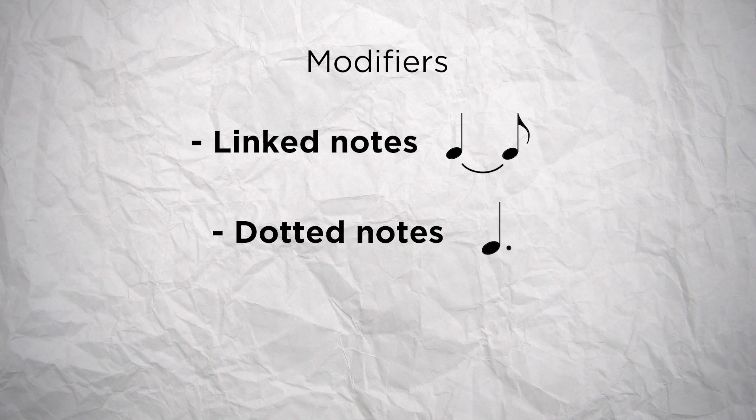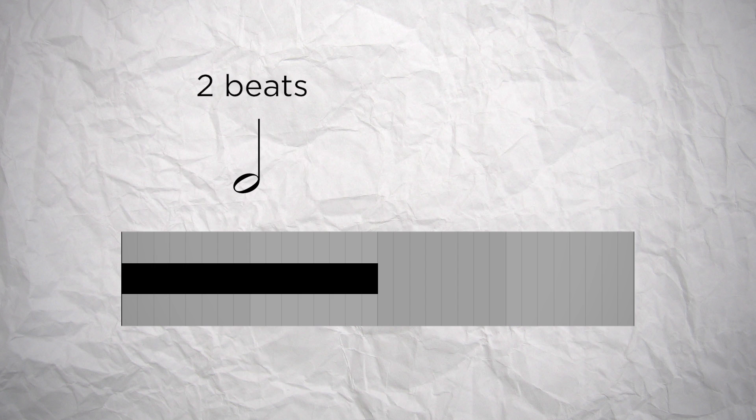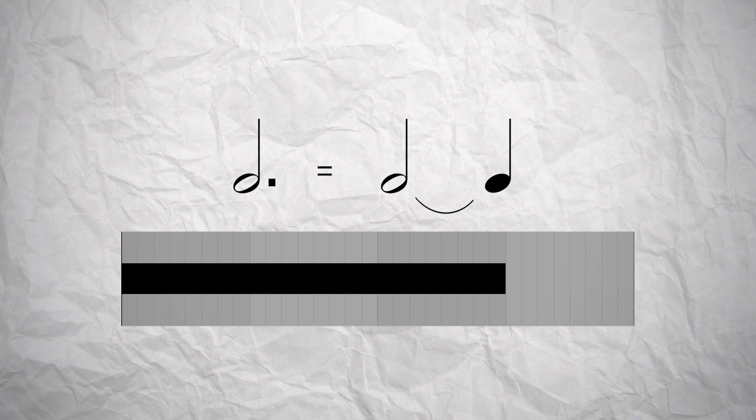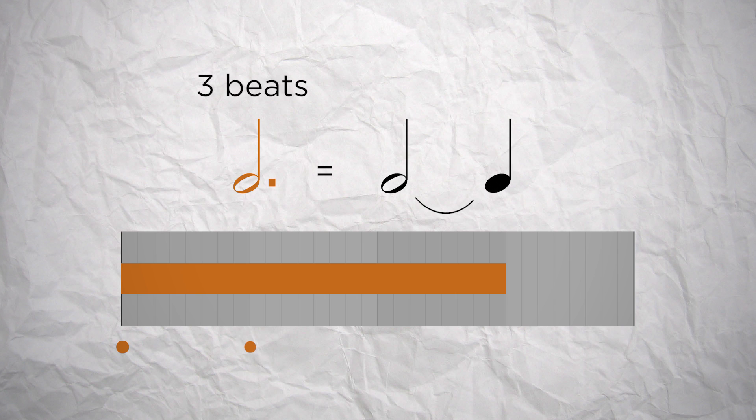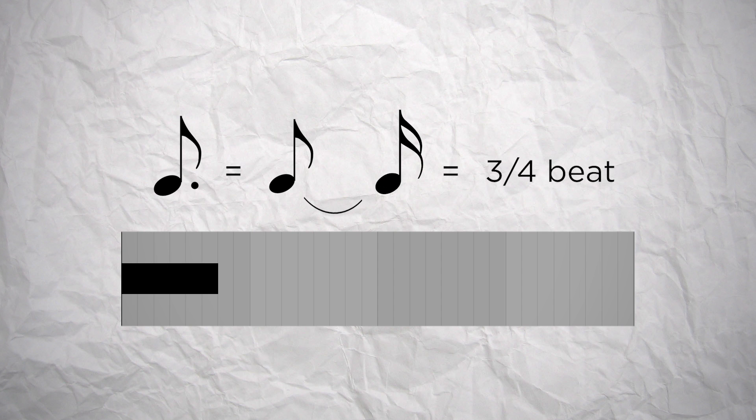Secondly, you can also add a dot to a note. Basically, it extends the length of these notes by half of its original value. For example, a half note is 2 beats. But a dotted half note would be a half note plus the half of a half note. So it's the same length that a half note plus a quarter note. 3 beats. A dotted eighth note would be the same than an eighth note plus a sixteenth note, which would be 3 quarters of a beat in total.